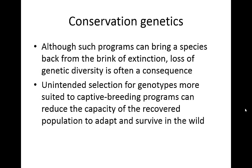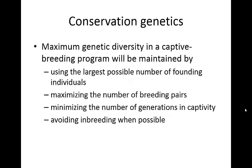One of the negatives of captive breeding is that it might reduce the capacity of that population, once it recovers, to adapt and survive in the wild — they may become somewhat domesticated, like dogs, which were formerly wolves. Some things we can do to prevent this include maximizing genetic diversity by using the largest number possible of founding individuals, and zoos will often swap individuals to maintain this diversity. We should also maximize the total number of breeding pairs, minimize the number of generations in captivity before releasing back to the wild, and avoid inbreeding wherever possible.